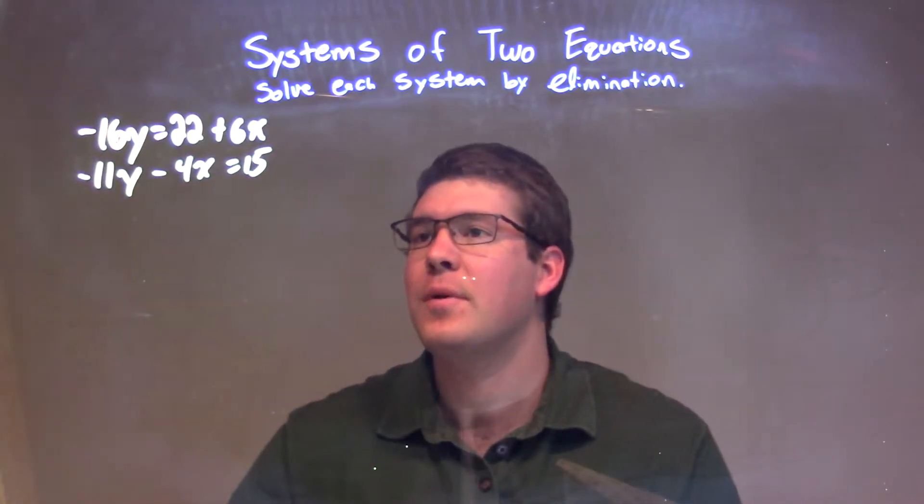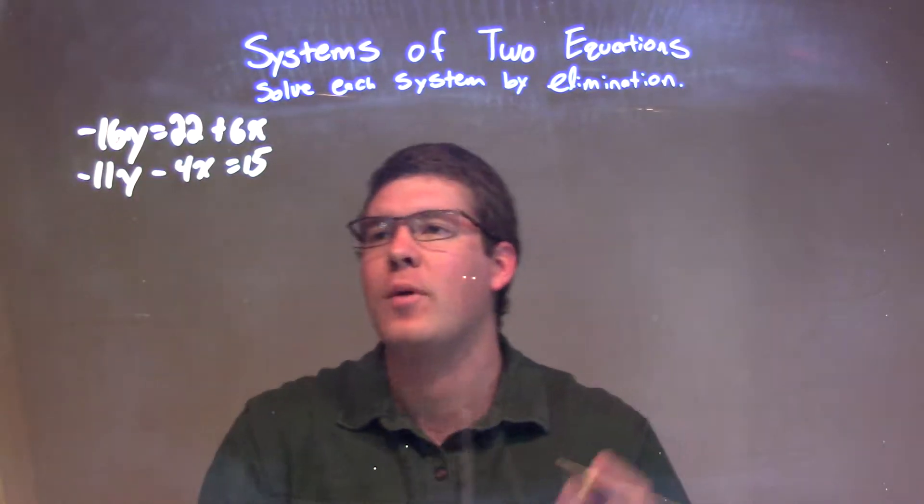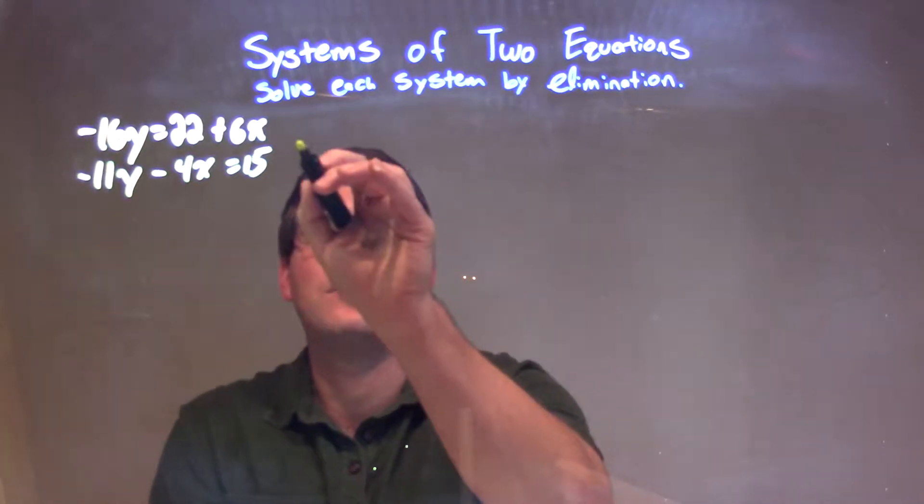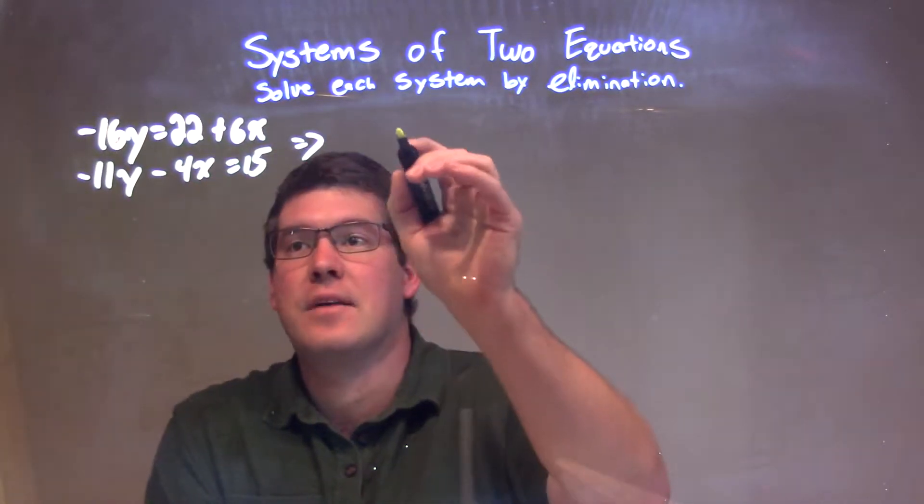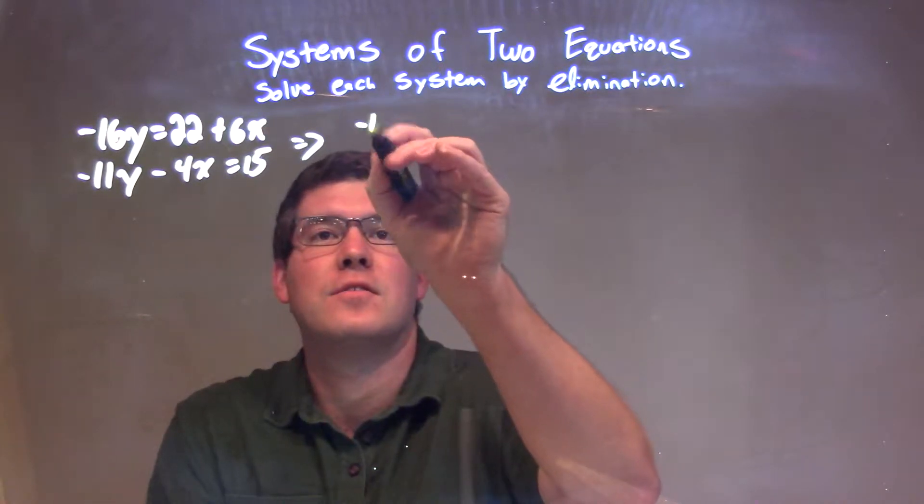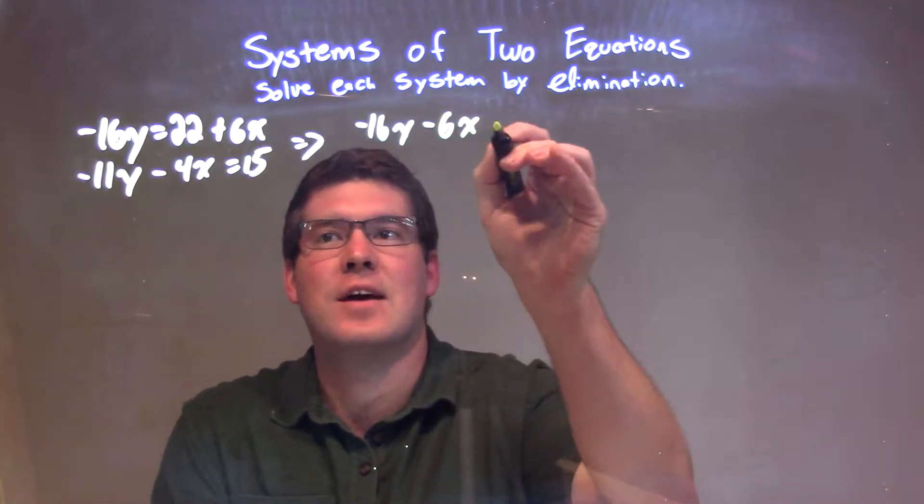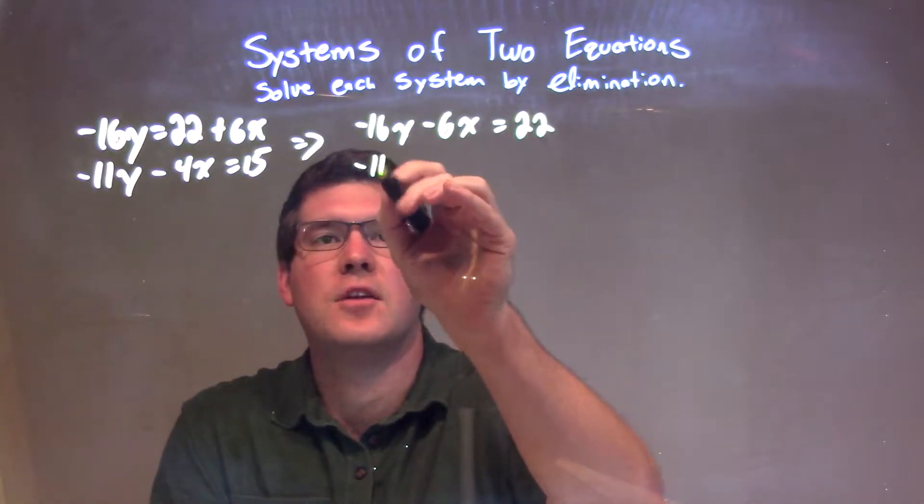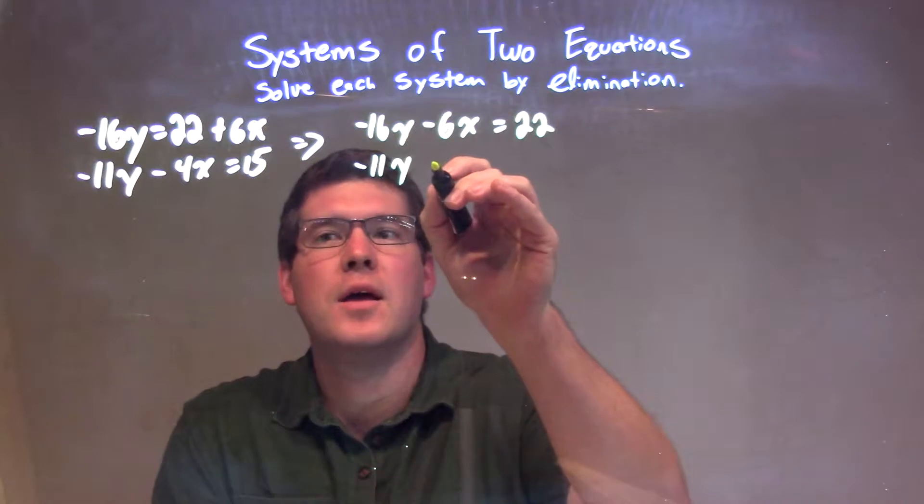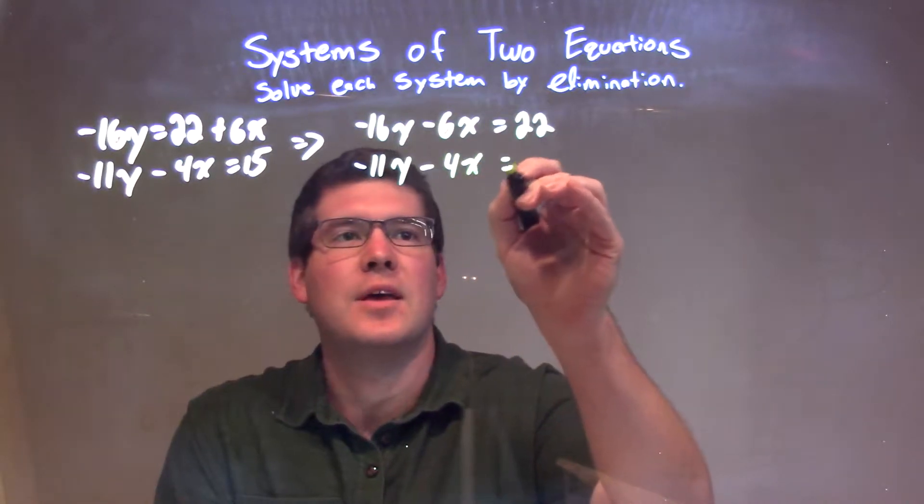Well, first thing I'm going to do is rearrange this to have all my variables on the left and my number on the right. So really the top equation needs to change. I'm going to subtract the 6x from both sides. So negative 16y minus 6x now equals a positive 22. And the second equation, I just bring it over: negative 11y minus 4x equals 15.